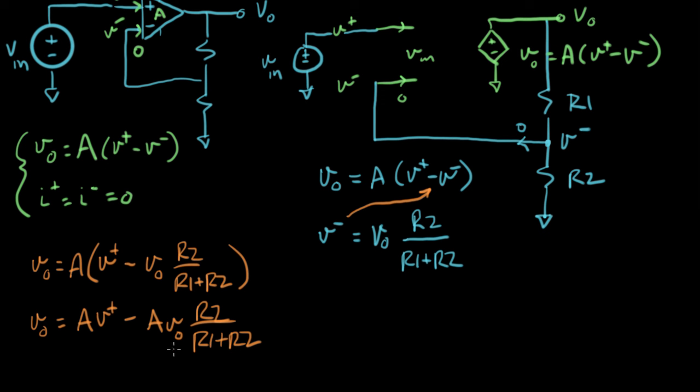Let's keep working on this. V out equals A times V plus minus A V out R2 over R1 plus R2. All right, so now I'm going to gather all the V out terms over on the left-hand side. Let's try that.